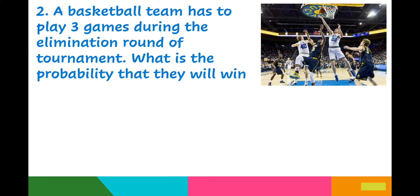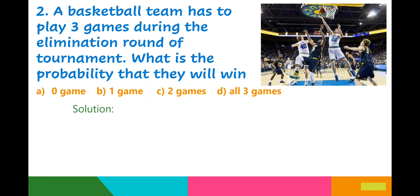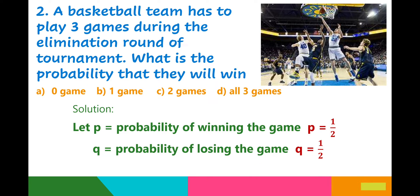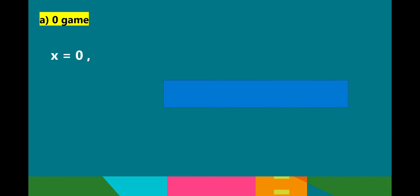Example 2: A basketball team has to play 3 games during the elimination round of a tournament. What is the probability that they will win 0 games, 1 game, 2 games, and all 3 games? Given: P is the probability of winning. There are 2 possible outcomes — win or loss. The probability of winning is 1 over 2, Q (probability of losing) is 1 half, and n equals 3.